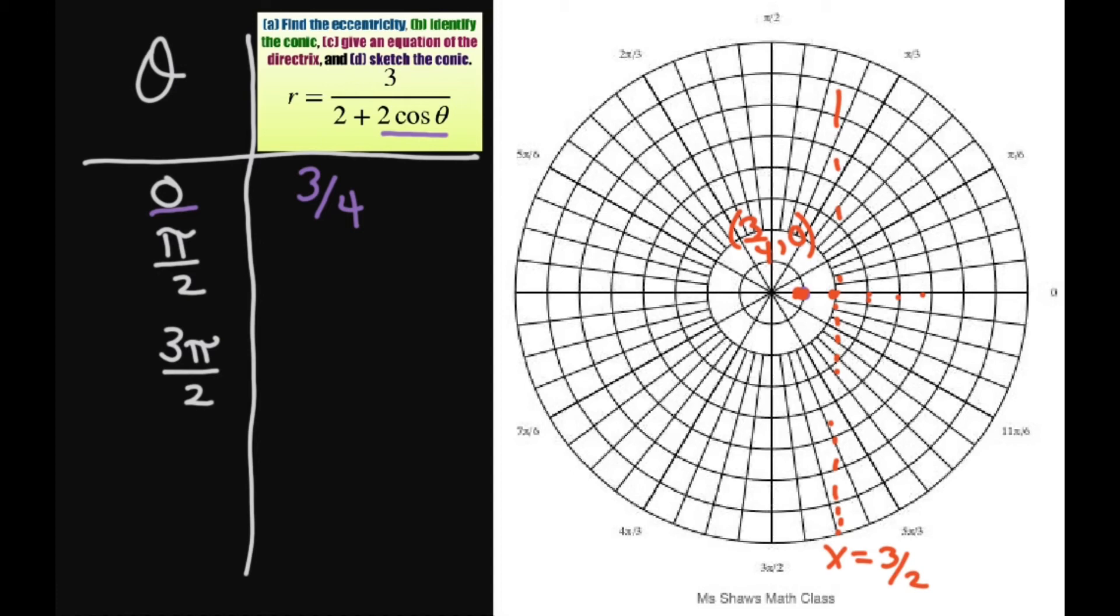Let me write this out on the side. At theta equals pi over 2, we get 0, so r equals 3 halves. That's going to go out 2. And 3 pi over 2 is also going to be 3 halves, because cosine is 0 here. So at 3 pi over 2, we're at 3 halves, going out 2.